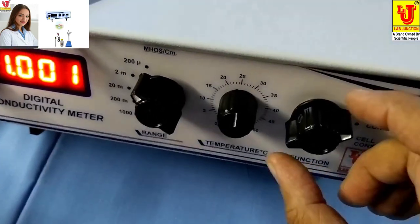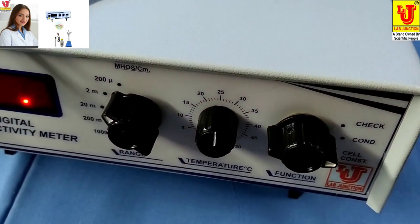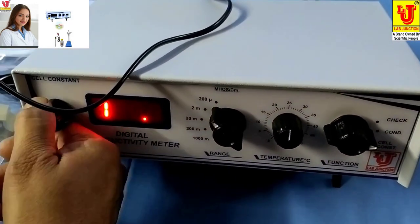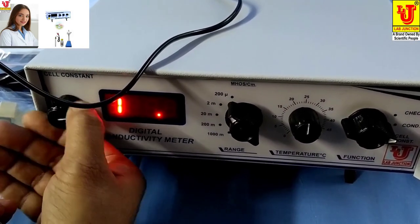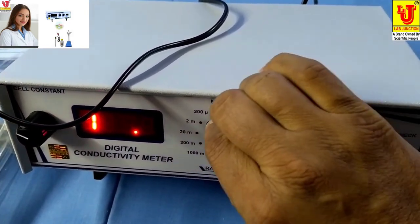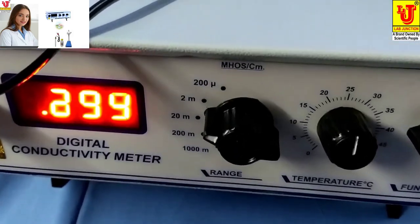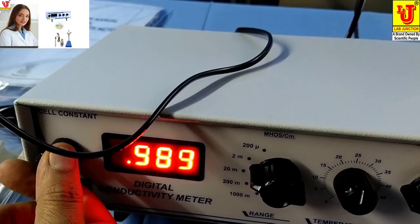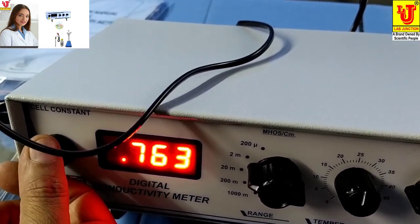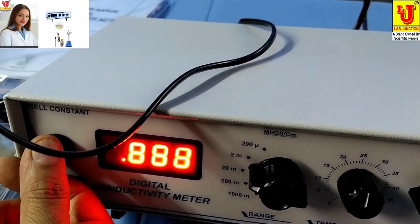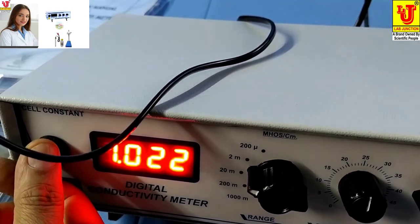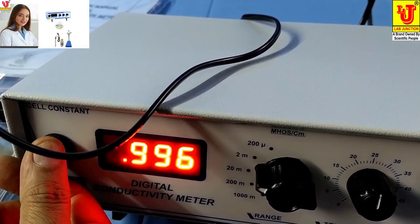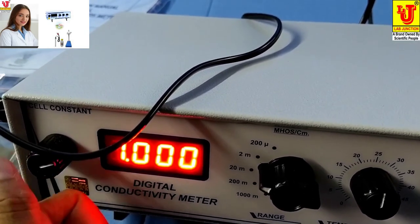Now you can set to Conductivity Position. This is our range on first position like we checked again. Now you can do on second range and set it to your known standard solution value 1 Milli. You can do on second range of decimals like this.